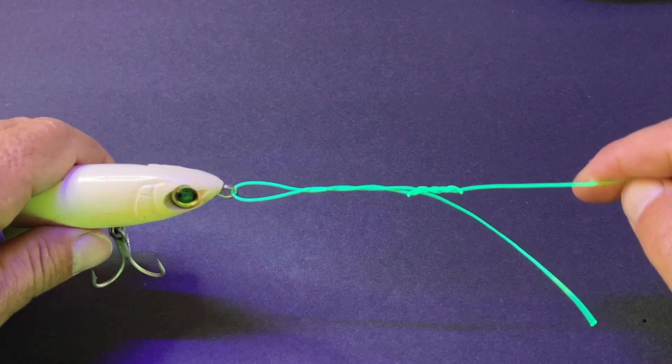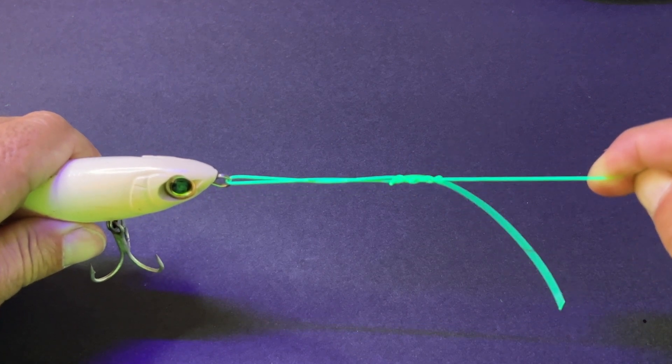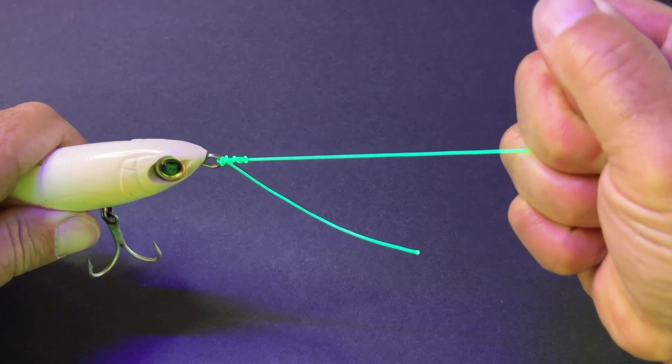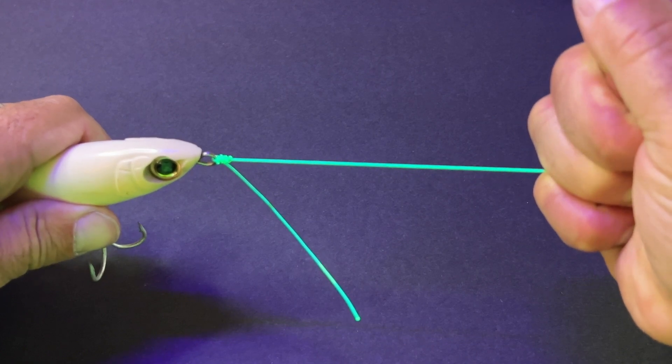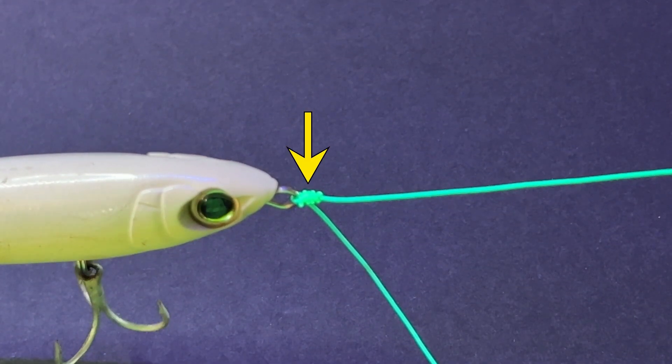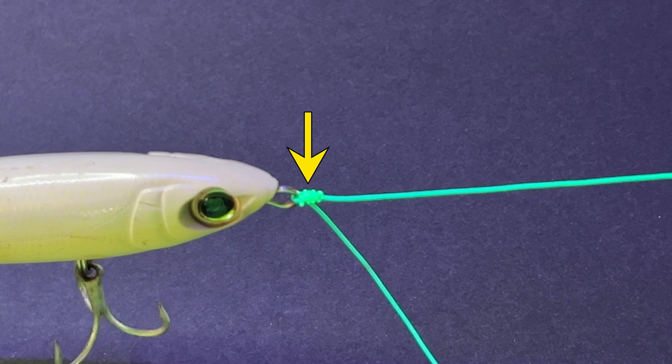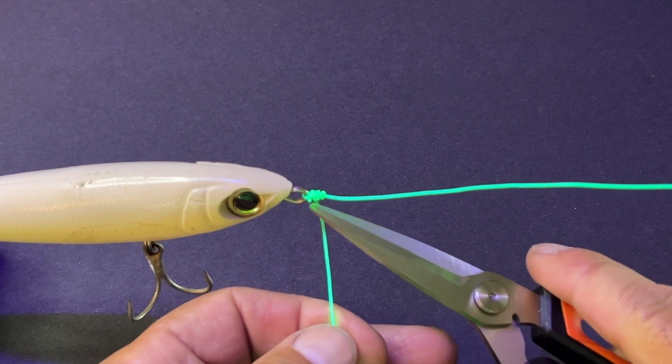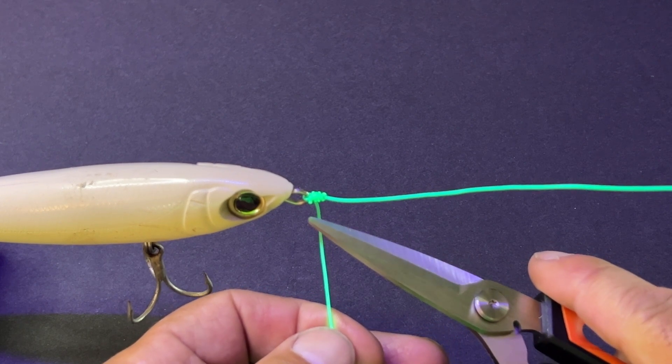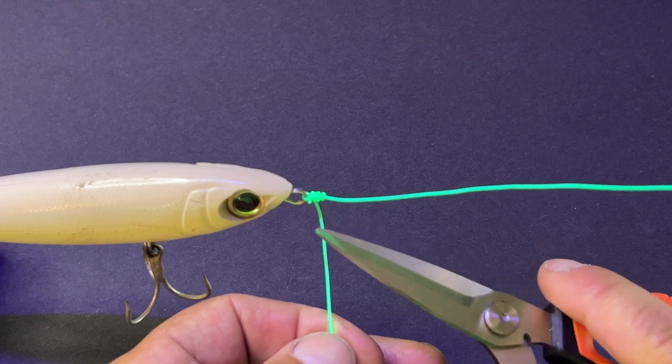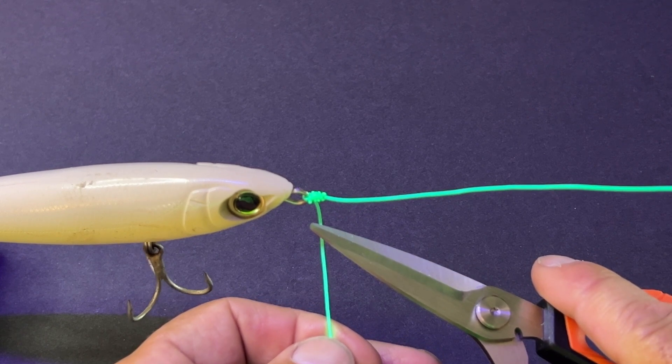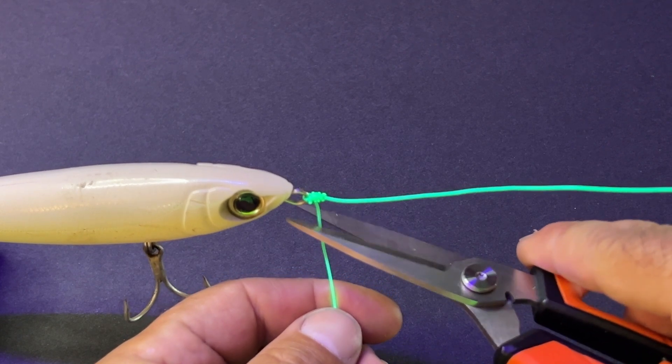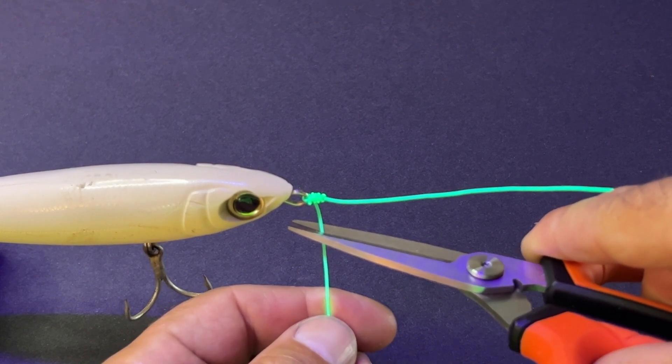Now I'm going to pull the main line to finish the knot. There you got a good view of that improved clinch knot. Now finally, we're going to cut our tag, but we never cut the tag right against the fishing knot. You always want to leave about a quarter inch because this fishing knot can still tighten just a little when you're fighting a fish. So you're going to cut that tagline right about there.